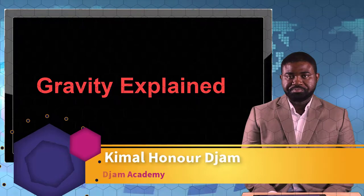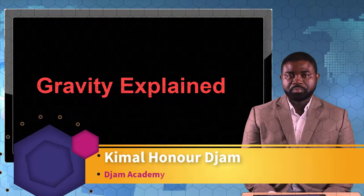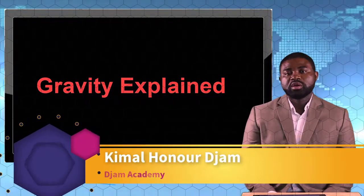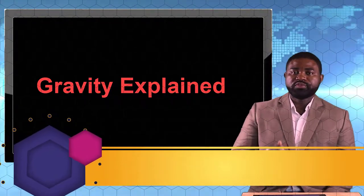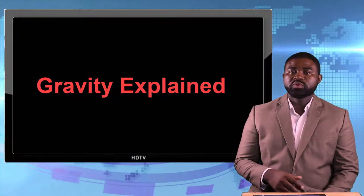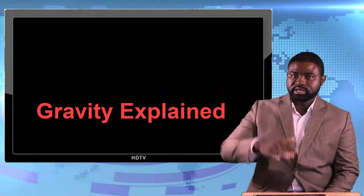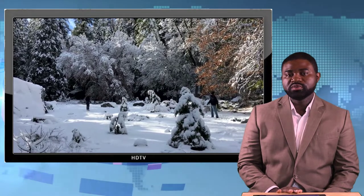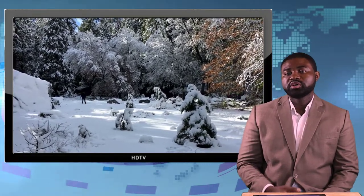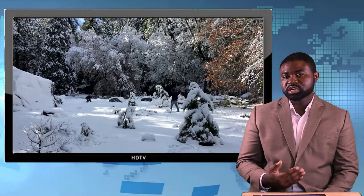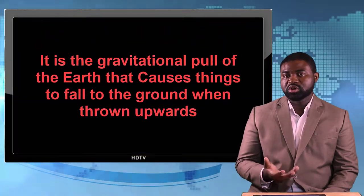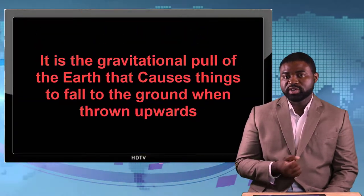Gravity. If you throw something upwards, it will eventually fall back down. The reason it falls back down is because the earth is pulling it downwards. This force of attraction by the earth on that object is what we call gravity.